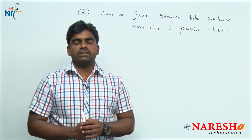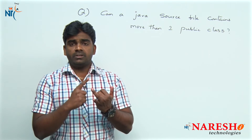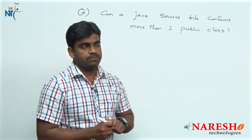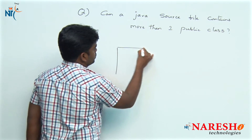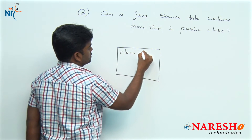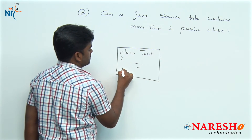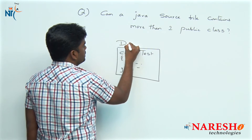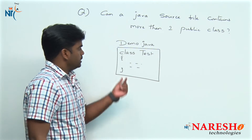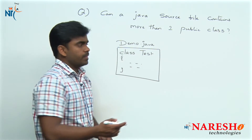According to the Java specifications, one strict rule is that if a class is a public class, the class name and file name should be same. For example, suppose this is a source file and inside we are writing a class — suppose a test class. If we save it with the name demo.java, there is no error here because the class is not a public class; it is a package-level class only.